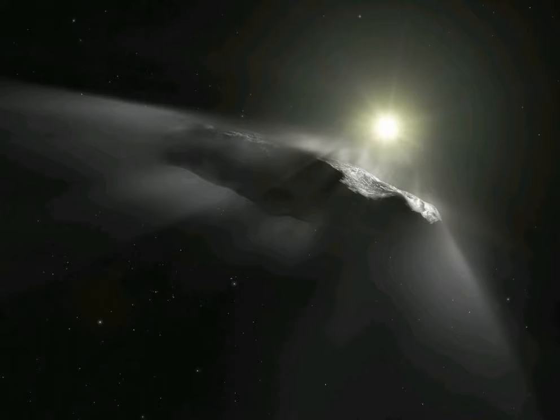On the other hand, Oumuamua, which was discovered in October 2017, lacked the familiar coma or envelope surrounding the comet's core and a tail of gas and dust pointing away from the sun.